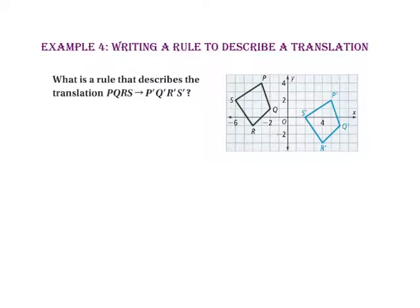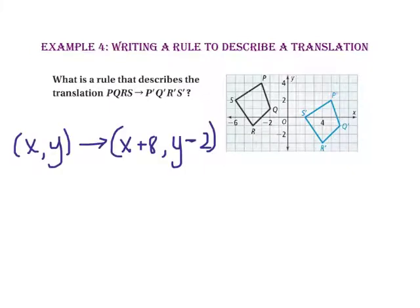In example 4, we will write a rule describing a translation. What is a rule that describes the translation of PQRS mapped onto P', Q', R', S'? Since point P moves 8 units to the right and 2 units down, our translation rule will be: (X, Y) is mapped onto (X plus 8, Y minus 2) — 8 units to the right, 2 units down.